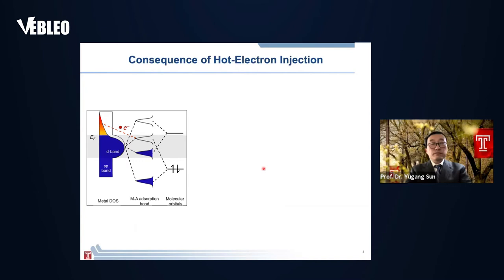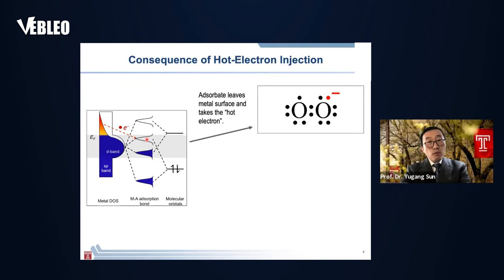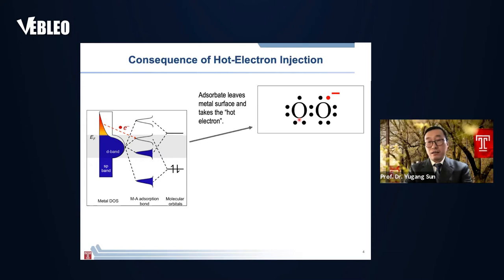Once the electrons are injected into surface adsorbents, where will the electrons go? Electrons will generally be injected into the empty antibonding orbitals — the LUMO orbitals. Once the electrons inject into these empty orbitals, the adsorbents can leave the metal surface and take the hot electrons away, forming a radical anion — for example, superoxide anions. This changes the reacting species' chemical reactivity, thereby changing the following chemical reactions.